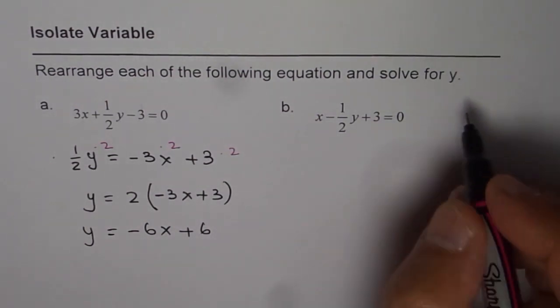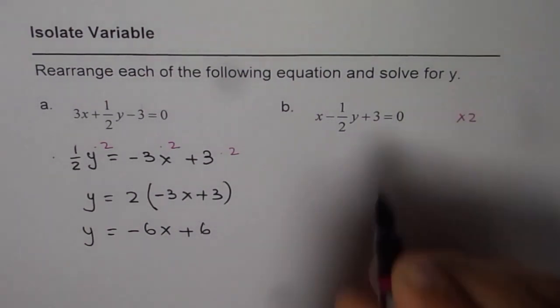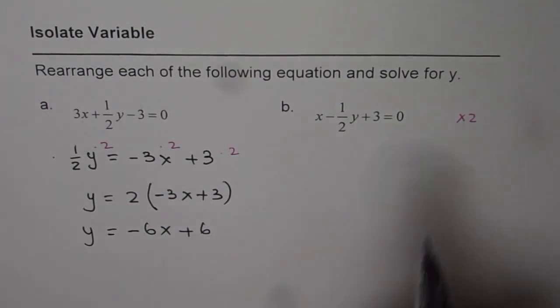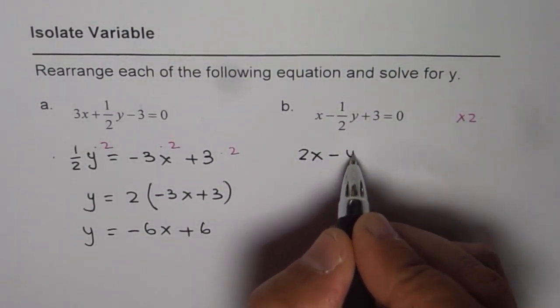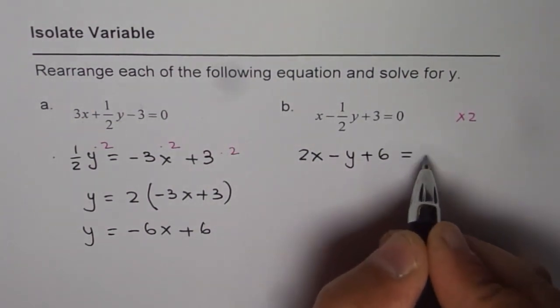In that case, when we do times 2 every term, what do we get? We get 2x minus y plus 6 equals to 0.